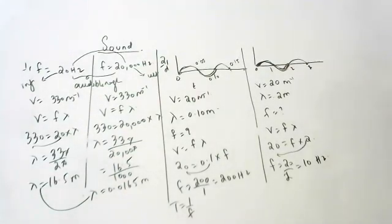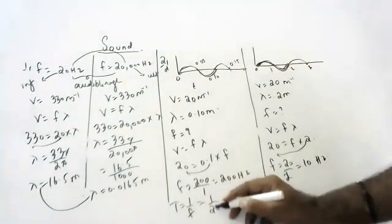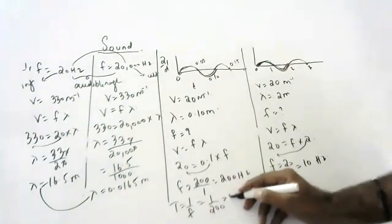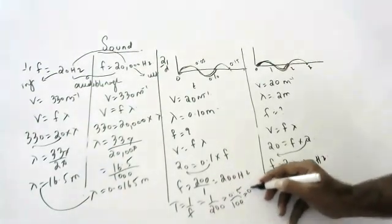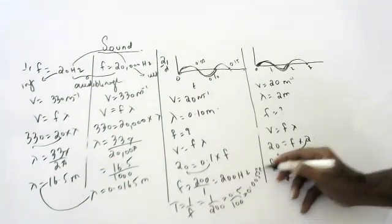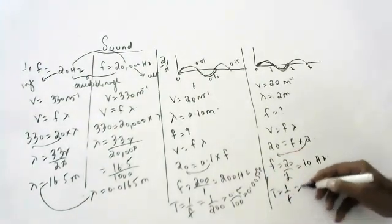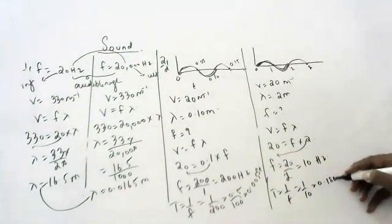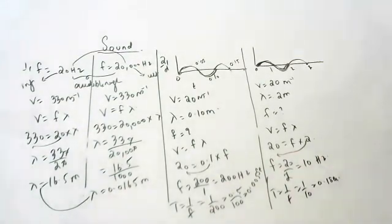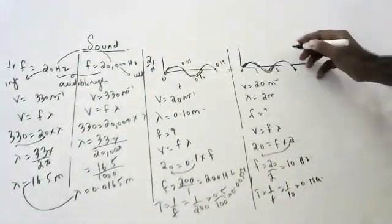The time period is one divided by frequency. For the first graph: time period = 1 ÷ 200 = 0.005 seconds. For the second graph: time period = 1 ÷ 10 = 0.1 seconds. You can calculate these easily. That finishes the second question.